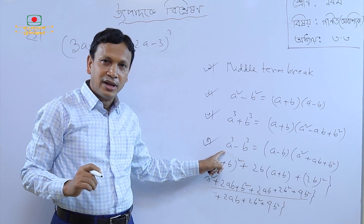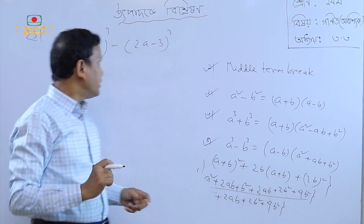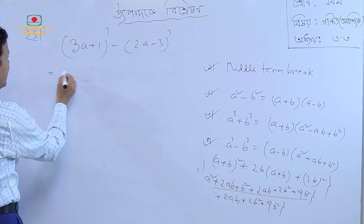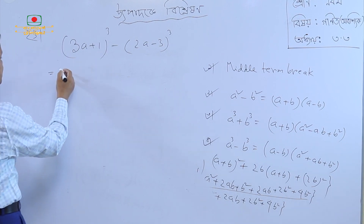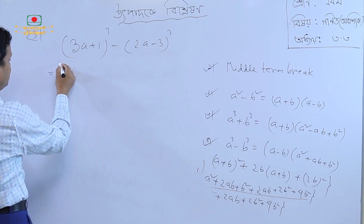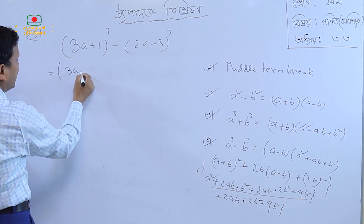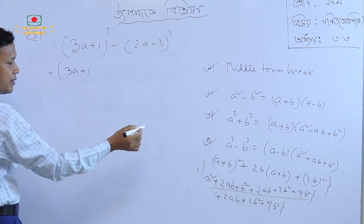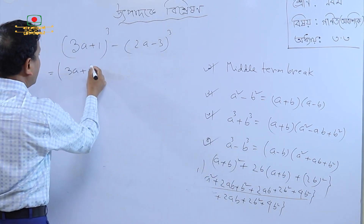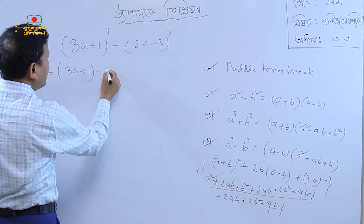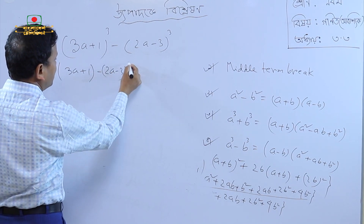When you say a, the answer is the first term and the second term is the second term. So, the first term is the second term. Now, the first term is the second term. We have a minus a minus b.